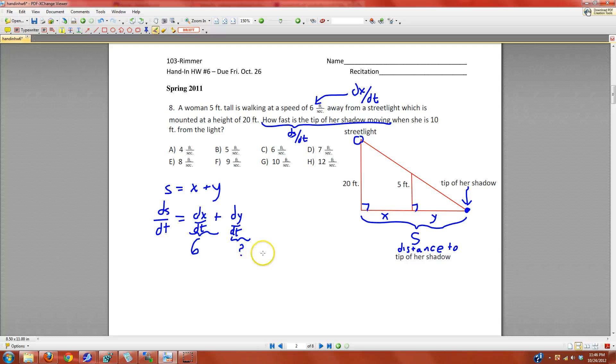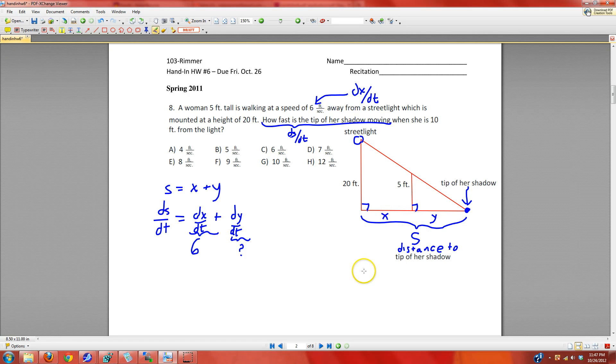In most of these problems, what you're going to find is that part of the information you have explicitly given to you, the other part you have to go out and find. In order to find what dY/dt is, we need a relationship between X and Y. And so, that comes from similar triangles.